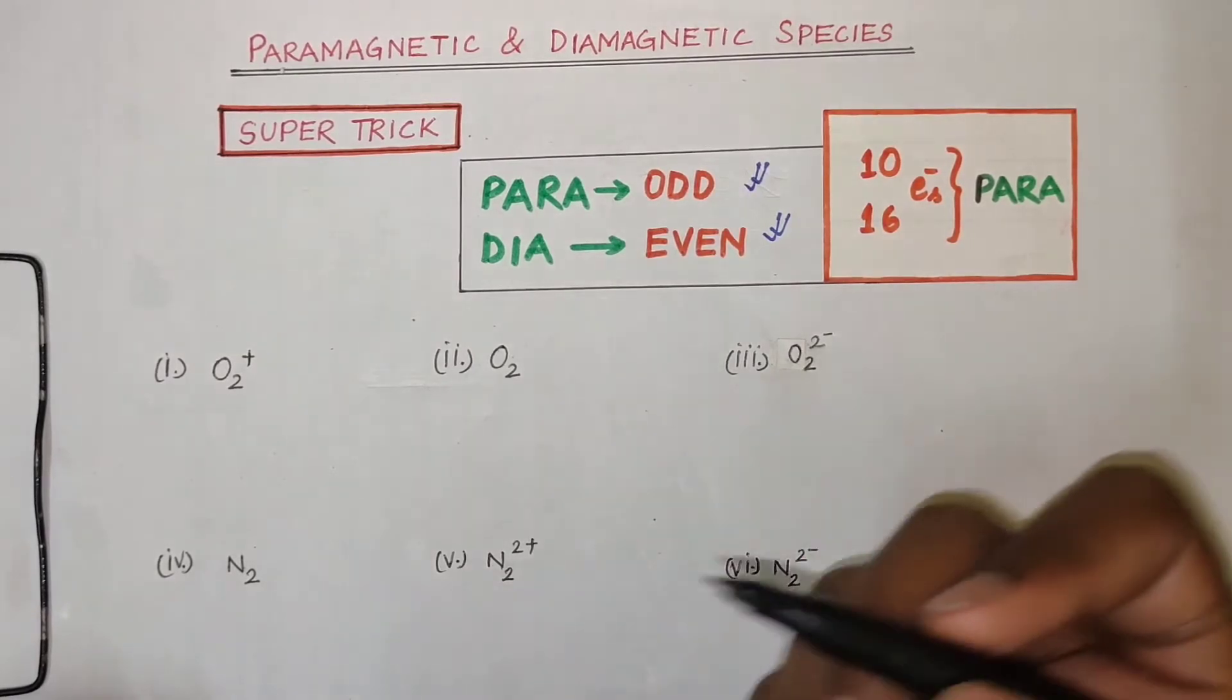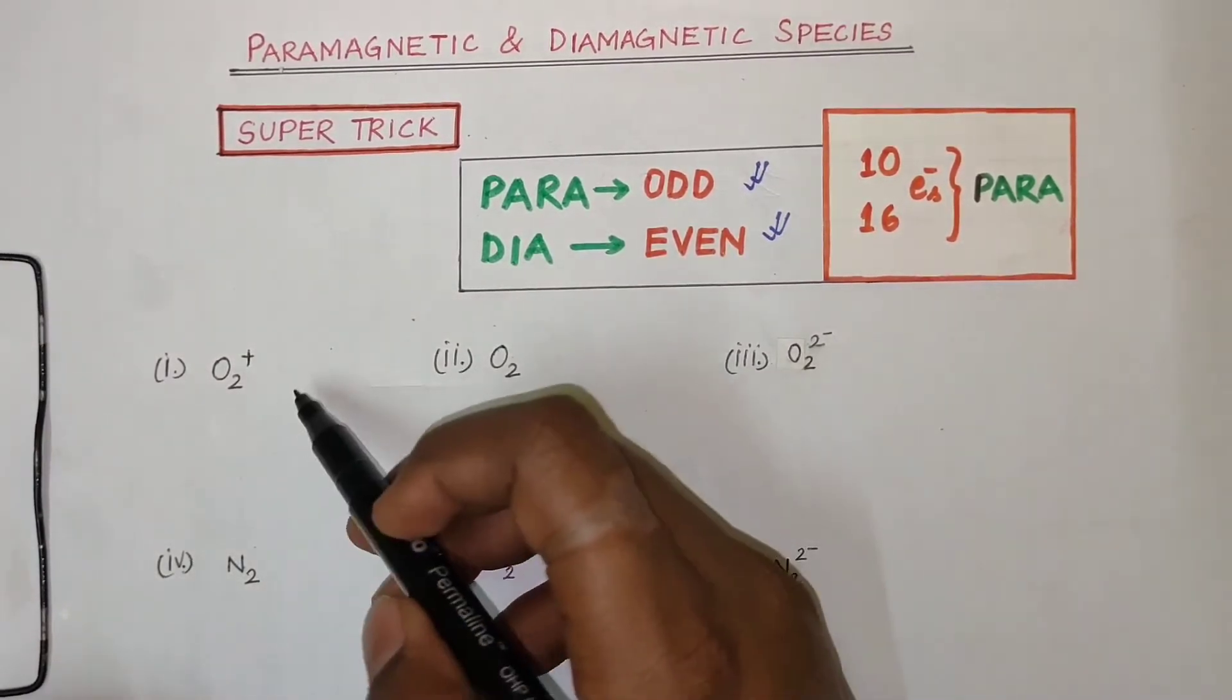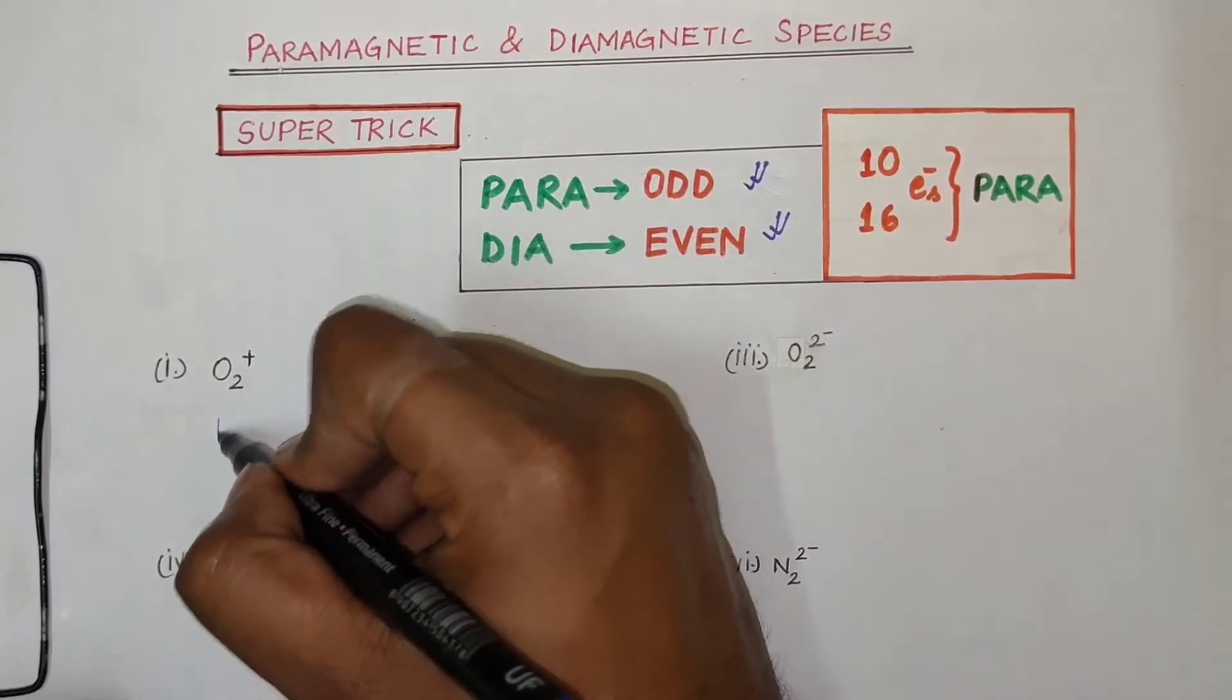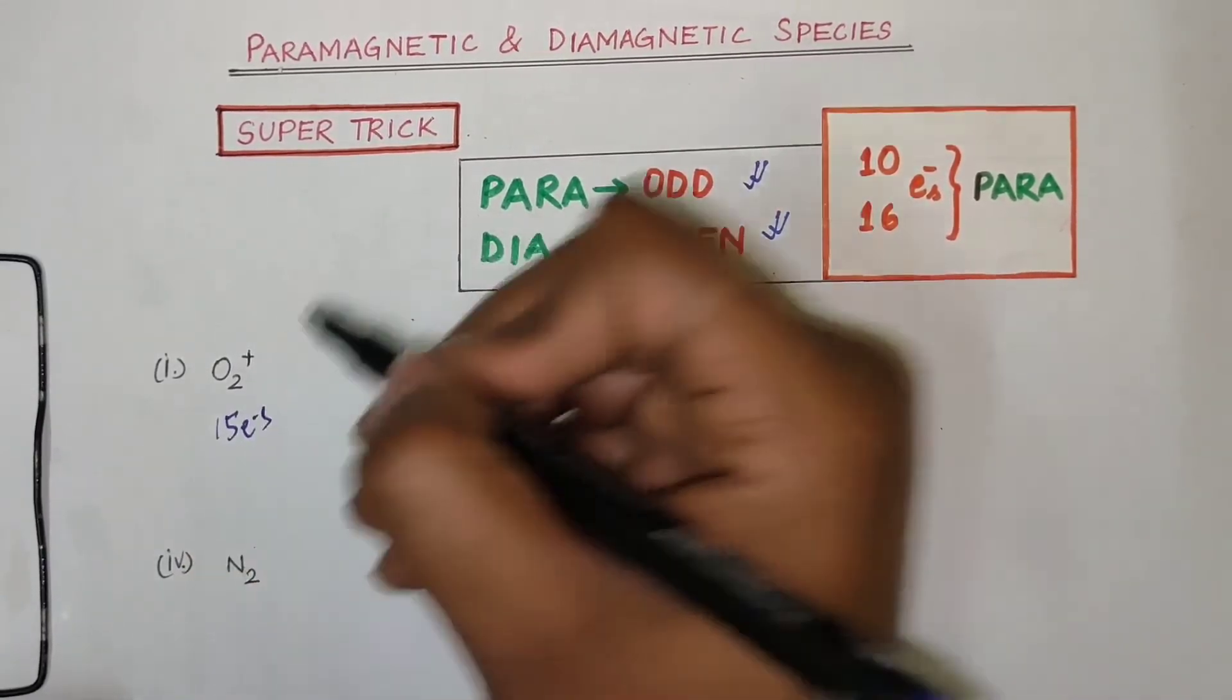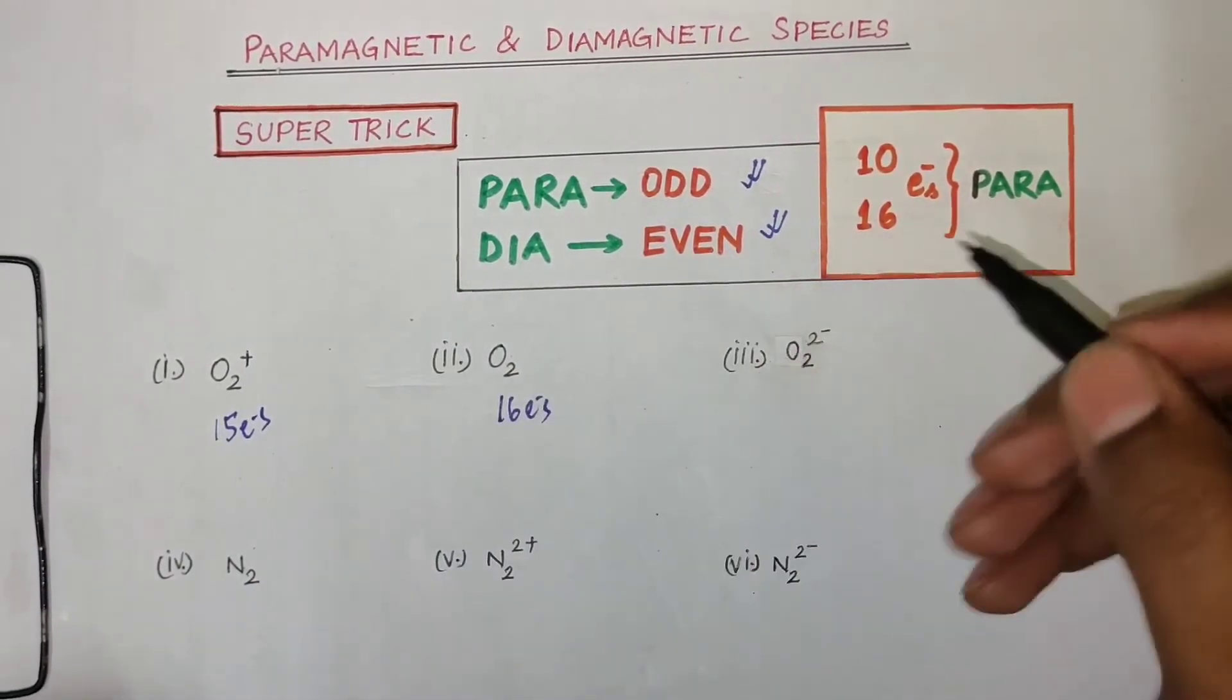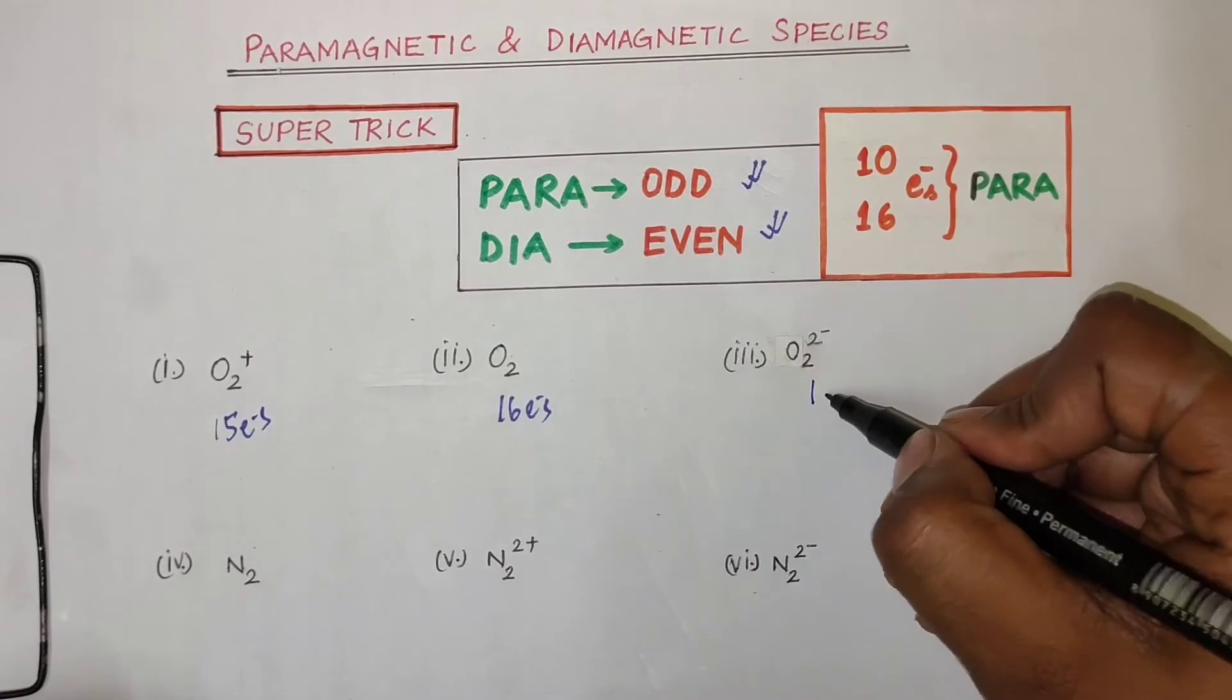So I will write all these species total number of electrons. O2+ 8 to 16 plus 1, so here we need to see 15 electrons. O2 what will we need to see? 16 electrons. O2 2- what will we need to see? 18 electrons.